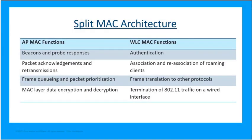A key component of CAPWAP is the concept of split media access control. With this, we're going to have the functions normally performed by an individual access point distributed across two functional components. The first functional component is the access point MAC function, which handles the beacons and probe responses, packet acknowledgements and retransmissions, and frame queuing and packet prioritization.